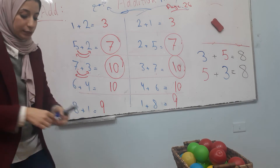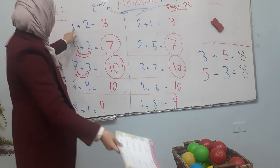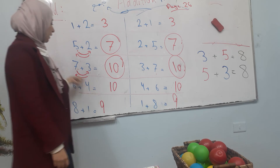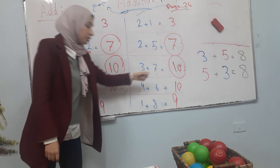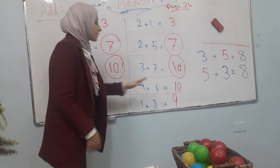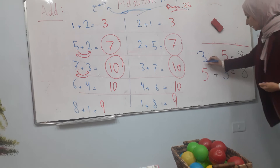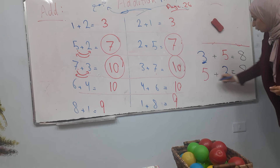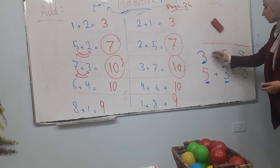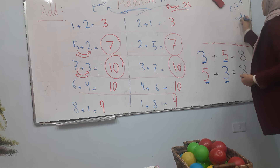إن الجمع عملية تبادلية. إذا عكست الأرقام، النتيجة بتضل نفسها. One plus two هي نفسها two plus one. Five plus two هي نفسها two plus five. Seven plus three هي نفسها three plus seven. Six plus four هي نفسها four plus six. إذا الجمع عملية تبادلية — ما بيأثر شي على نتيجة الجمع.